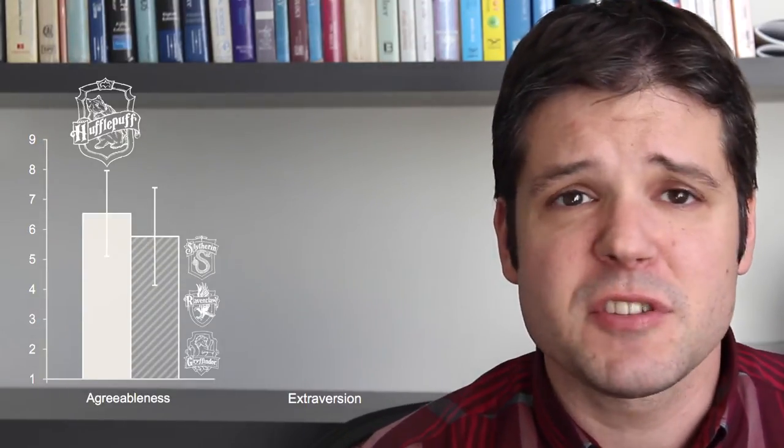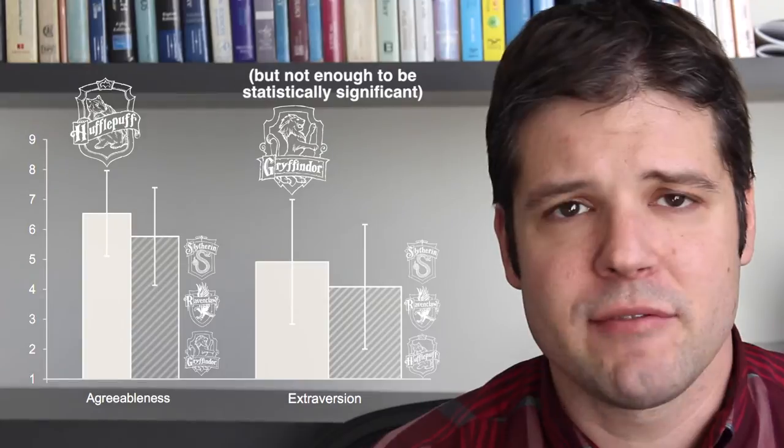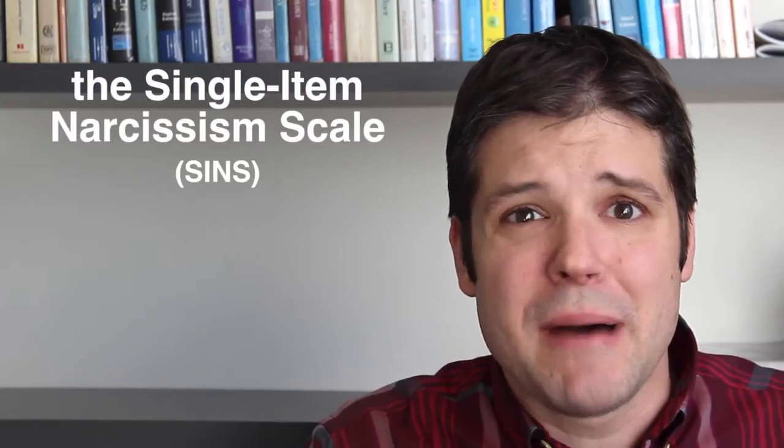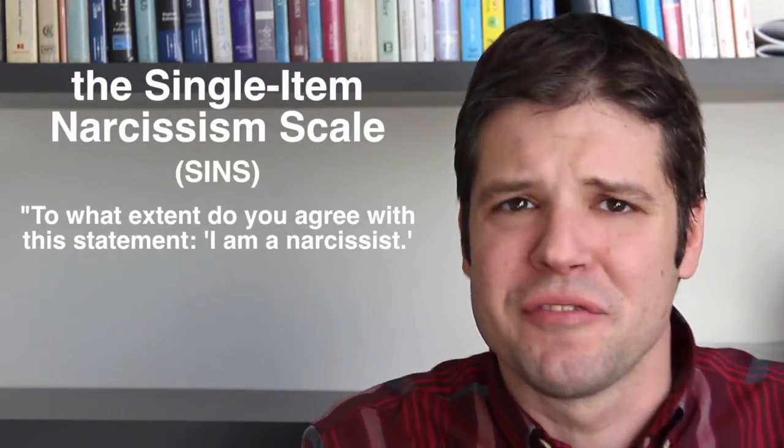They found that Hufflepuffs were more agreeable than average, and Gryffindors were slightly more extroverted than average. Slytherins were higher than average of the other houses in narcissism and Machiavellianism. Best way to measure narcissism, by the way, is just to ask people if they're a narcissist. Turns out narcissists are happy to say so.